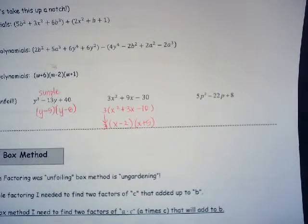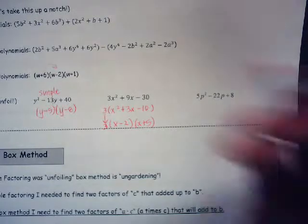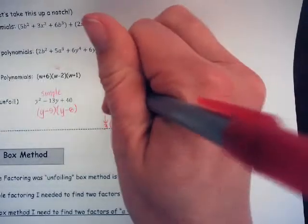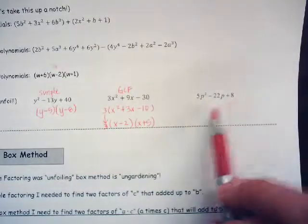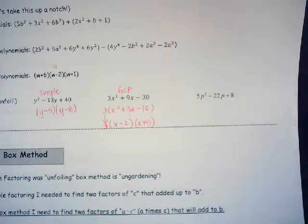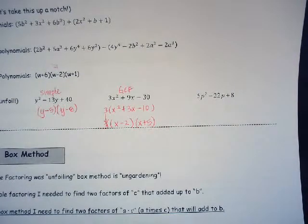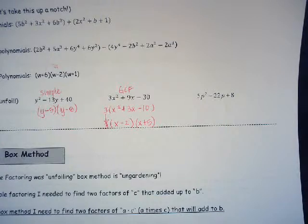Let's look at this next one. The first coefficient isn't 1, so I can't use my simple method. Next thing I check: is there a common factor between those three numbers? There's not. That means that method is out of the question, so now I need a new method.